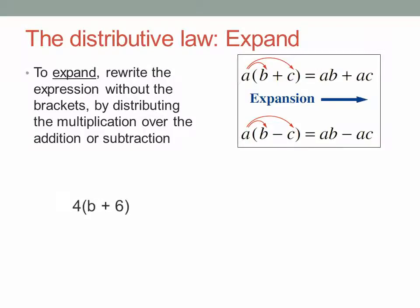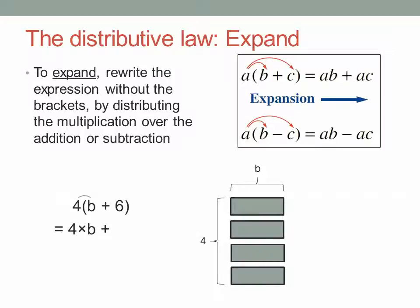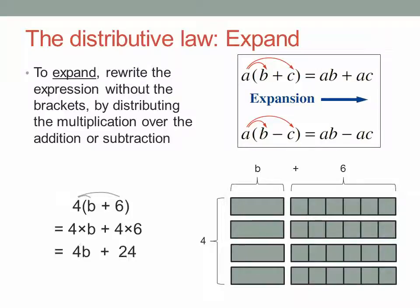For example, if you have 4(b + 6), you rewrite that as 4 lots of b plus 4 lots of 6, which is 4b plus 24. You've turned the original product into a sum.